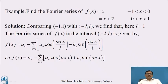Now we will see the example. Find the Fourier series of f(x) = x when -1 < x < 0, and equal to x + 2 when 0 < x < 1. Comparing -1 to 1 with -L to L, we find L = 1. The Fourier series is f(x) = a₀ + summation n=1 to infinity of aₙ cos(nπx) + bₙ sin(nπx).